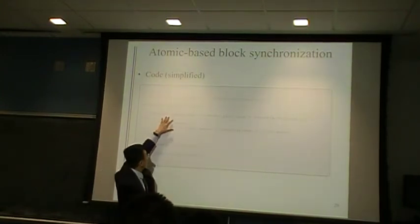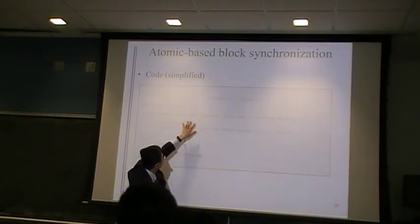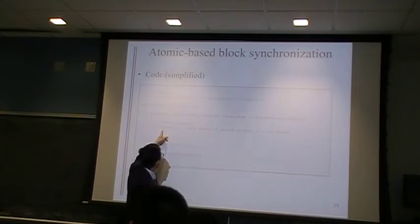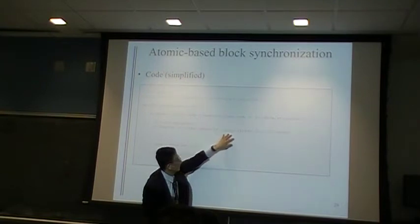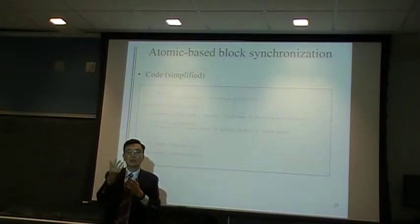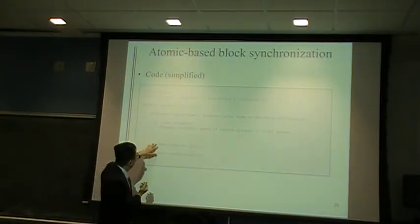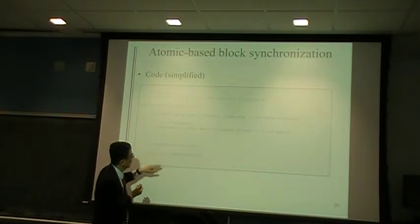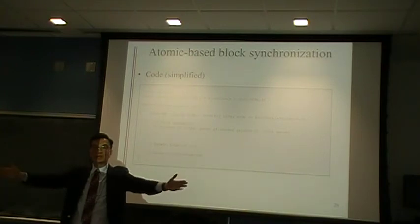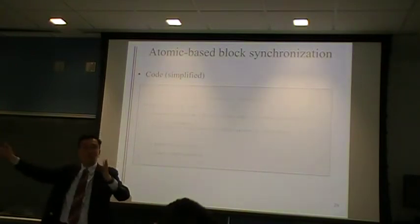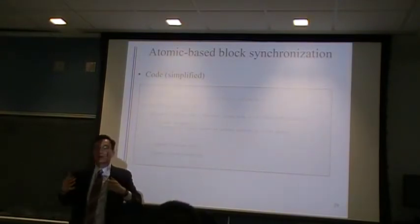Inside the for loop, the thread block will take a section of the frontier and have each thread visit the neighbors and enqueue them if not previously visited. Then you update the frontier size, do a global synchronization, and wait until everyone finishes with this frontier. Because there are multiple thread blocks involved, you need to make sure everyone has done the same thing before moving to the next frontier.